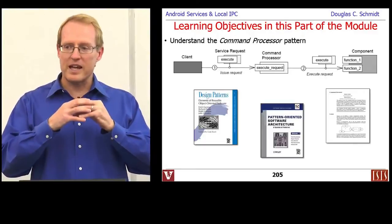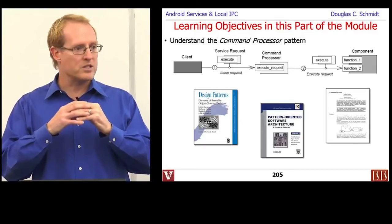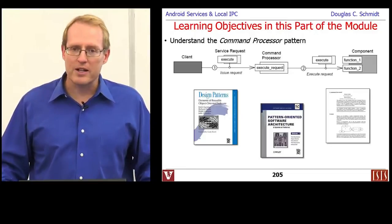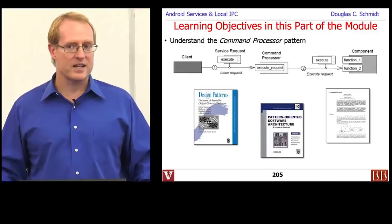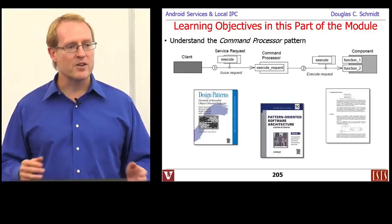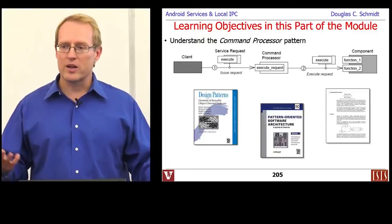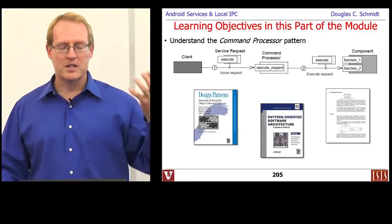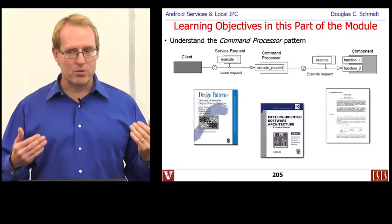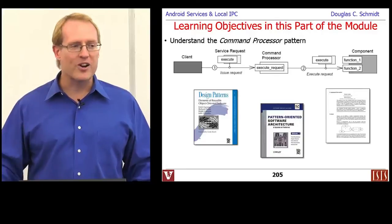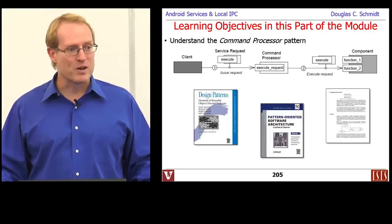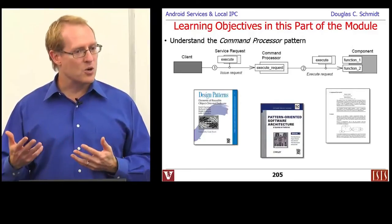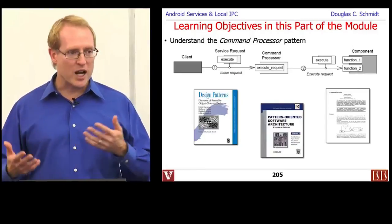In that case, commands were really self-contained objects used to encapsulate a request to a service as an object—like open this file or delete this file. As people got more experience applying patterns to other contexts, like distributed systems or concurrent systems, it became clear that the original context was too narrow. From there grew the Command Processor pattern, which is more about taking commands and passing them over to some kind of command processor where they're executed typically in a different thread or a different process.